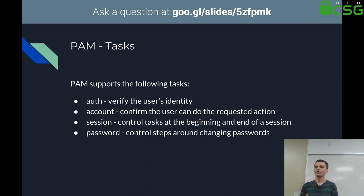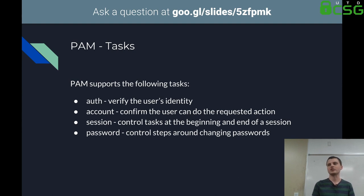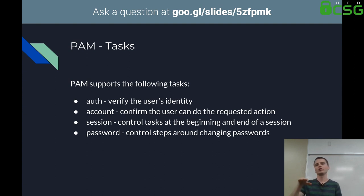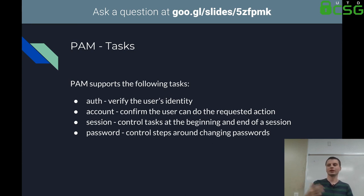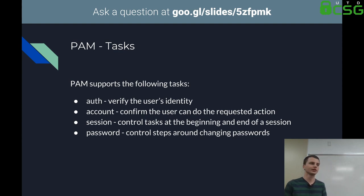The directives are: 'auth', which verifies user identity when you're trying to actually authenticate as your user. The 'account' directive checks to see if your account is allowed to do what you think you can do — a lot of the time checking the time of day against your user or checking your UID against a list of UIDs. 'Session' controls steps that happen at the beginning and end of your authenticated session, like setting or removing an authentication token. And lastly, 'password', which handles changing your passwords — if you've used the passwd utility, it's using PAM in the backend.